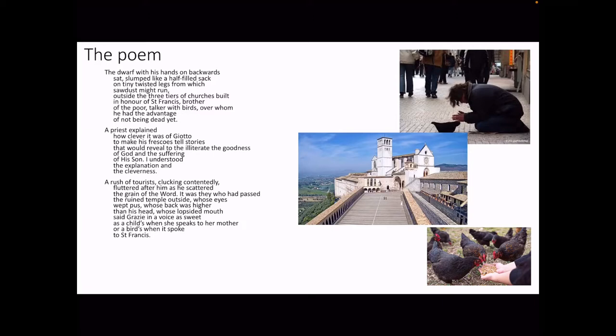The dwarf with his hands on backwards sat slumped like a half-filled sack on tiny twisted legs from which sawdust might run. Outside, the three tiers of churches built in honour of St Francis, brother of the poor, talker with birds, over whom he had the advantage of not being dead yet. A priest explained how clever it was of Giotto to make his frescoes tell stories that would reveal to the illiterate the goodness of God and the suffering of his son. And I understood the explanation and the cleverness. A rush of tourists, clucking contentedly, fluttered after him as he scattered the grain of the word. It was they who had passed the ruined temple outside, whose eyes wept pus, whose back was higher than his head, whose lopsided mouth said grazie in a voice as sweet as a child's when she speaks to her mother, or a bird's when it spoke to St Francis.